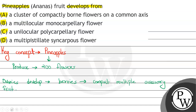और जो fruit होता है pineapple का, अगर pineapple के fruit को देखें, तो इसका जो fruit होता है, ये arranged होता है two interlocking helices में. मतलब 8 होती हैं एक direction में और 13 होती हैं दूसरे direction में.